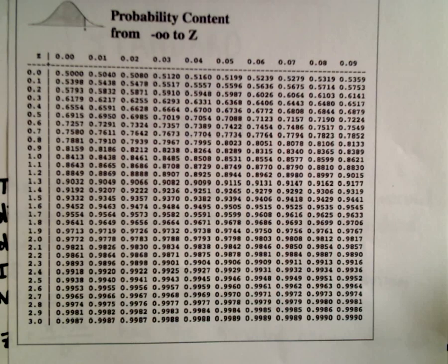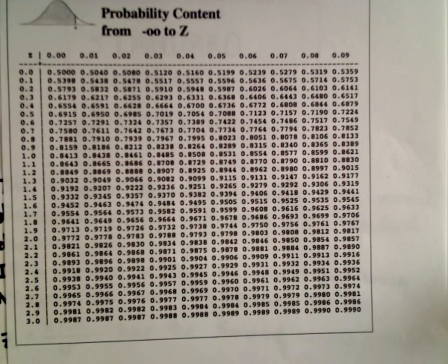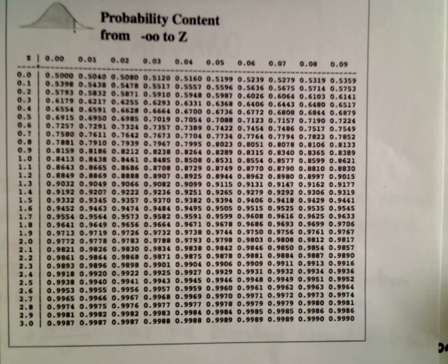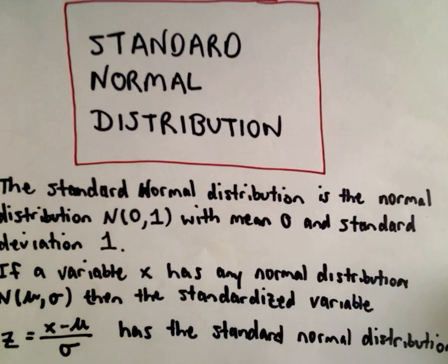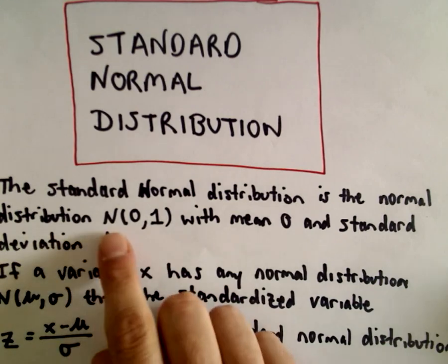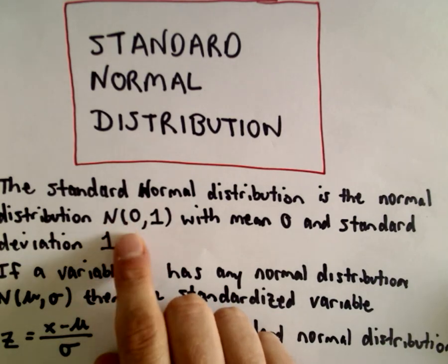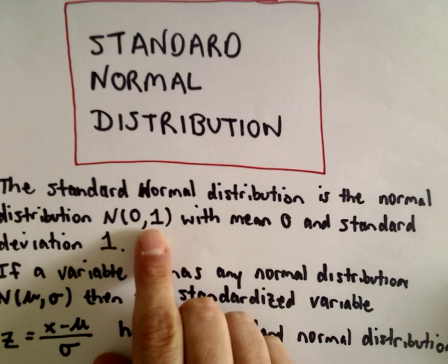This is a table I just found on the internet and was able to print off. Any statistics book will have them, or you can search for normal distribution tables online. The standard normal distribution is the normal distribution with a mean of zero and a standard deviation of one.